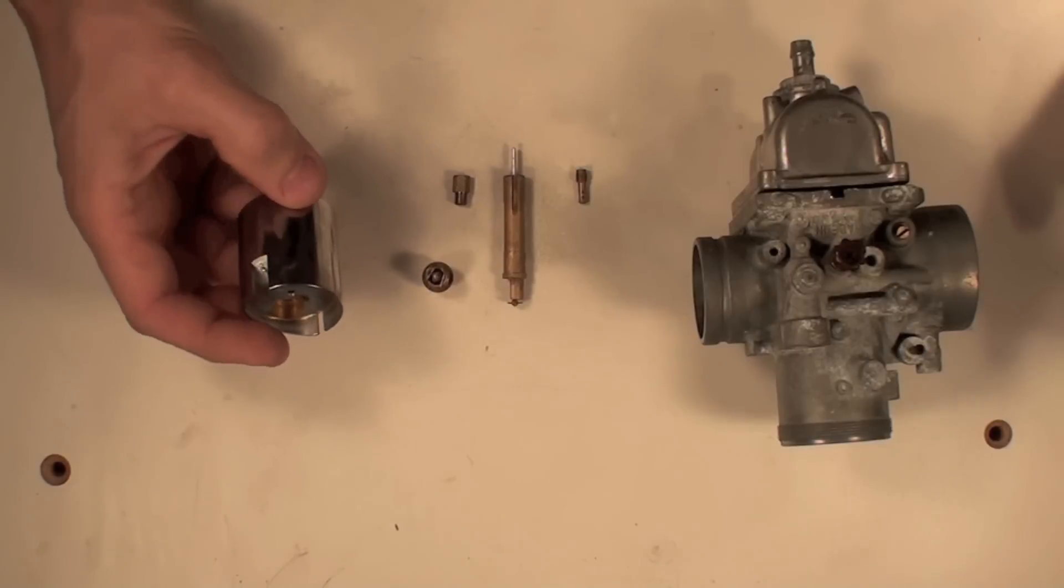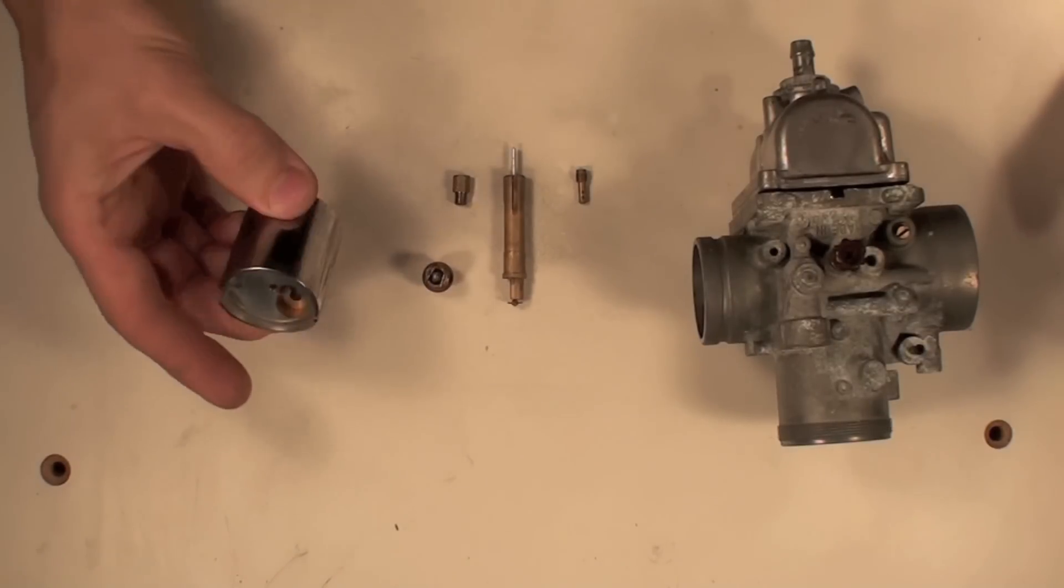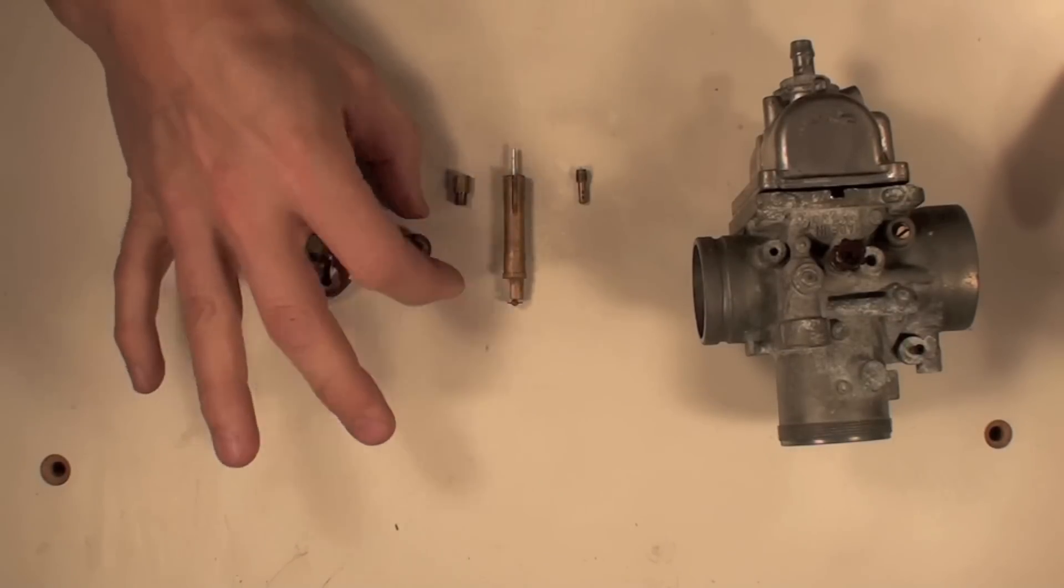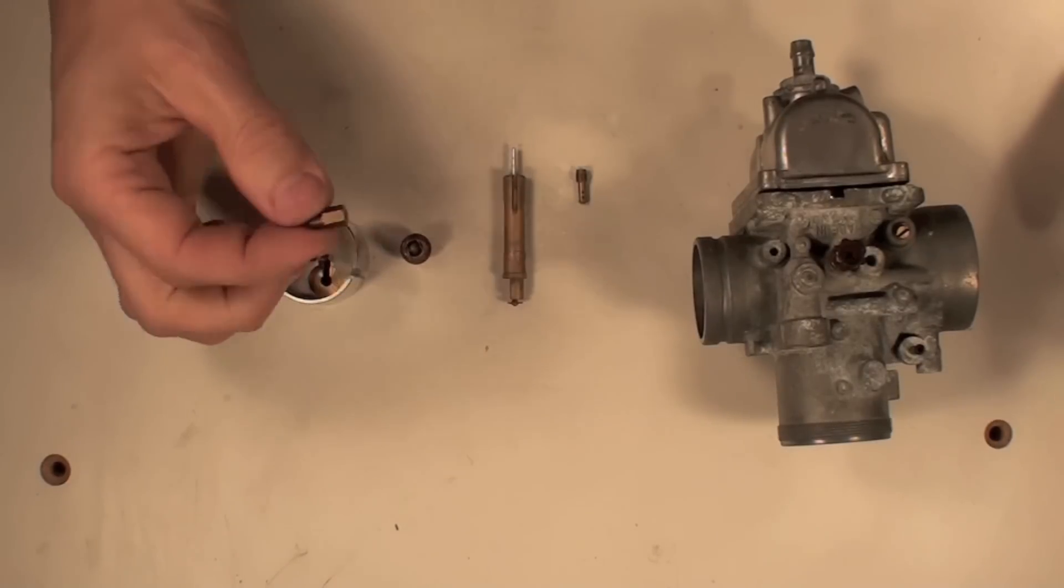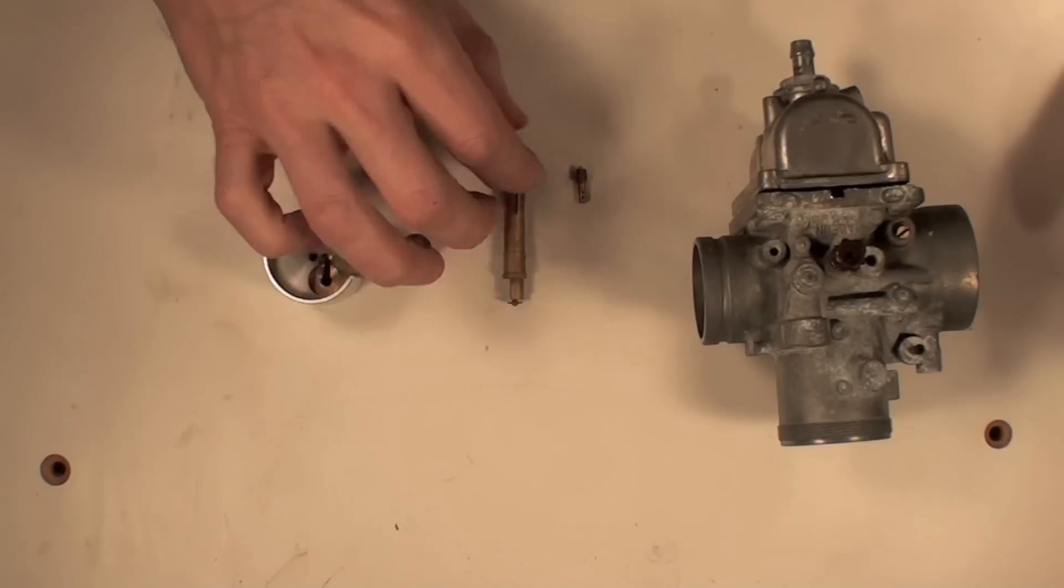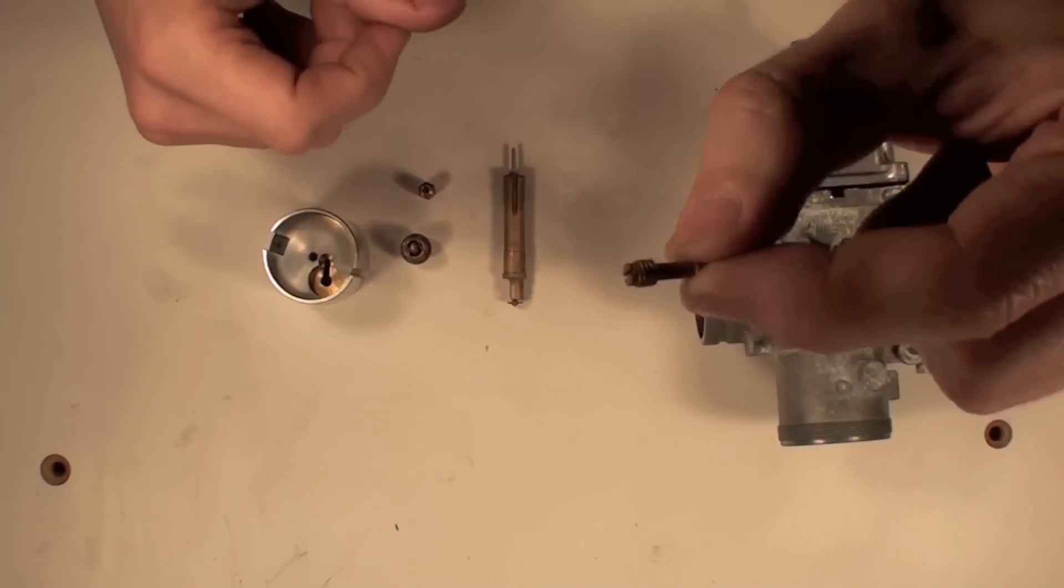Now the main parts of this are the piston valve or the throttle valve, what some people call it, the needle and seat, the main jet or a hex jet some people call them, and some carburetors are actually round. This is the pilot jet, little tiny thing.